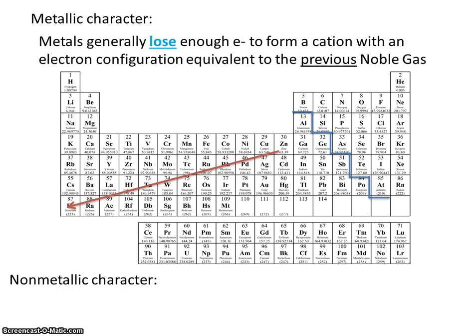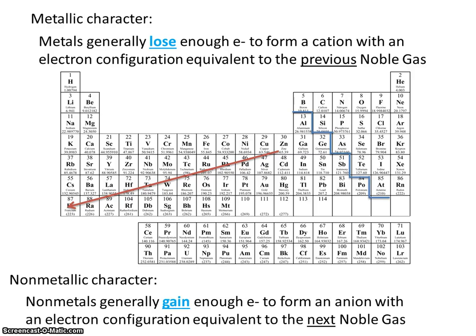Non-metallic character. We can think about that as the tendency of an atom to gain electrons. Non-metals generally gain enough electrons to form an ion with an electron configuration equivalent to the next noble gas. Fluorine is the element with the most non-metallic character. So as we go up and to the right, non-metallic character increases.